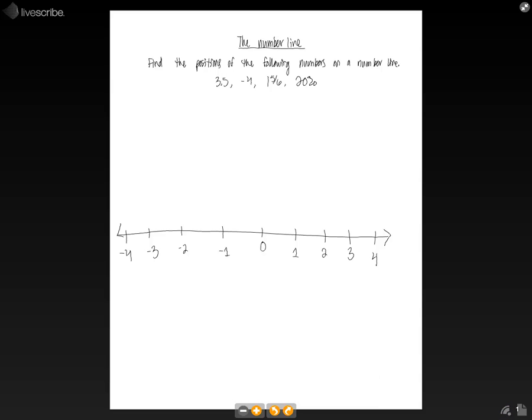In this lesson, we are going to go over how to locate different types of numbers on a number line. We have a set of four numbers here: 3.5, negative 4, 1 and 5 sixths, and 20%, and we are going to find where each of those lie on a number line.